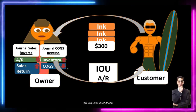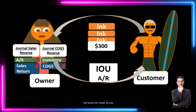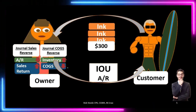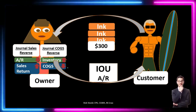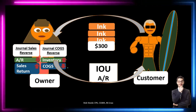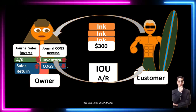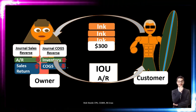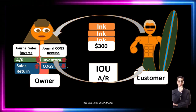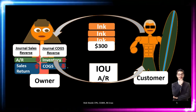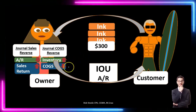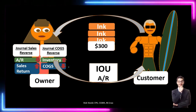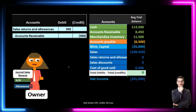The most confusing component for most students is that cost of goods sold will be going down. This should look unusual because cost of goods sold is an expense and like sales it typically only goes up. But unlike sales, we're going to break that rule here. We're going to say the expense is going down because we didn't really incur it — we sold the inventory, got it back, and therefore we decrease the cost of goods sold account.